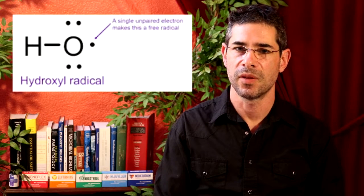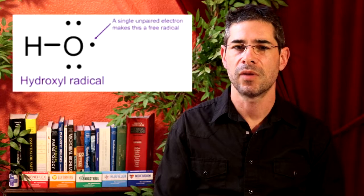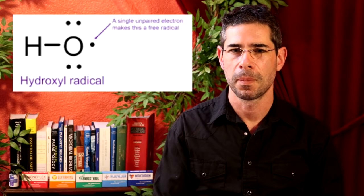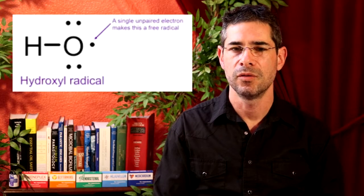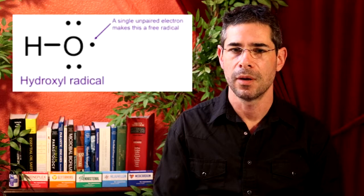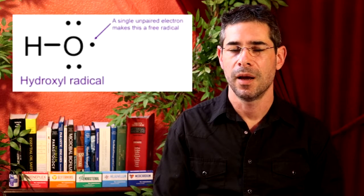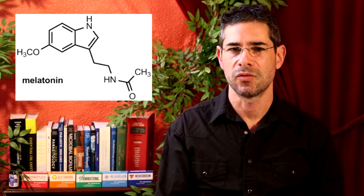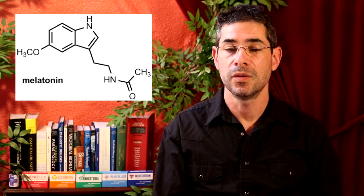That leaves us with one free radical left to deal with — the hydroxyl radical, the most powerful of the three. Hydroxyl radicals are formed when superoxide radicals, hydrogen peroxide, and metals meet together. There are two ways to neutralize hydroxyl radicals: one is you can bubble hydrogen through a glass of water and drink it, but hydrogen is odorless, colorless, and highly explosive, so probably not something you want to do at home. The way the body naturally handles hydroxyl radicals is by producing the antioxidant melatonin. Melatonin not only quenches the hydroxyl radical, but scientists now believe it can undo the damage that it's caused.